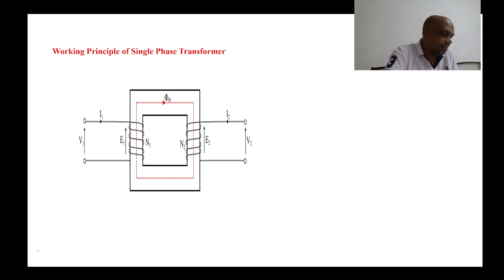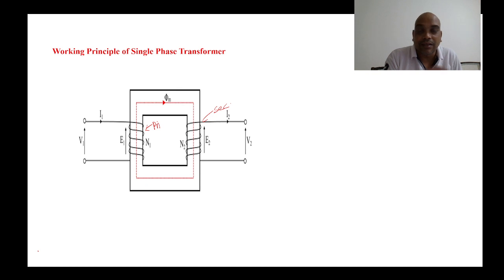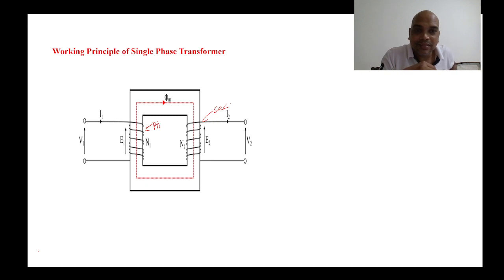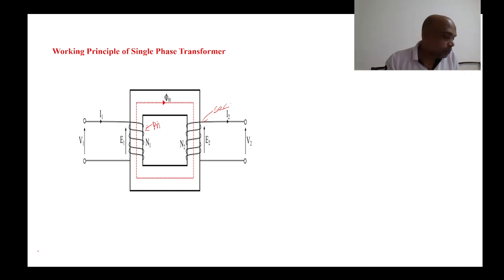The transformer has a primary winding and a secondary winding. In DC machines and synchronous generators, the type of EMF induced is dynamically induced EMF, because those machines have rotating parts. But in a transformer, there is no rotating part — both windings are stationary. The transformer itself is stationary.